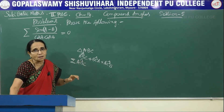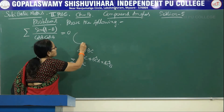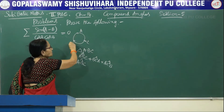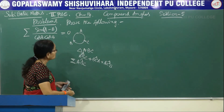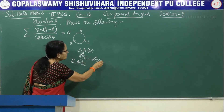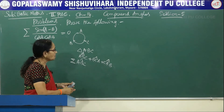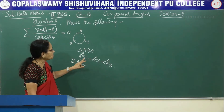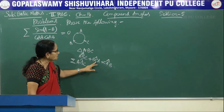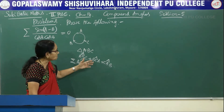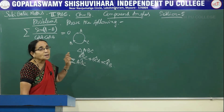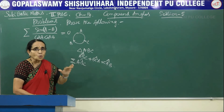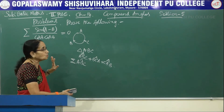You have to change the terms in cyclic order. Cyclic order means: A becomes B, B becomes C, C goes back to A. So we write ABC, then BCA, then CAB. So sigma always stands for summation and when you write only one term with sigma, there would be two more terms of the same type.